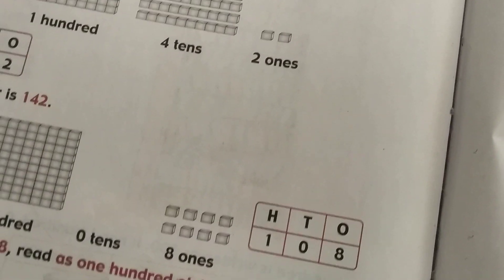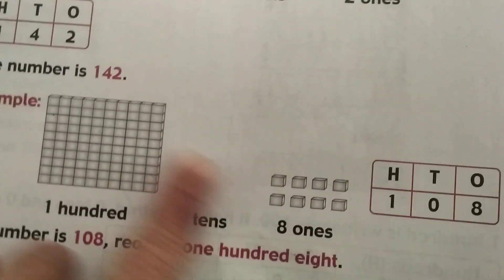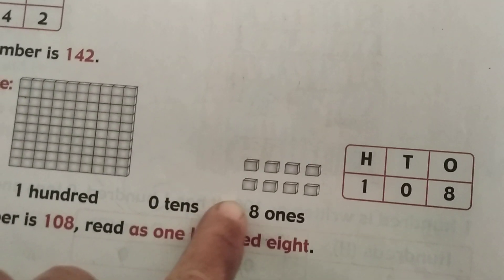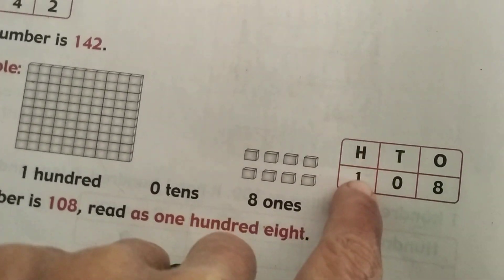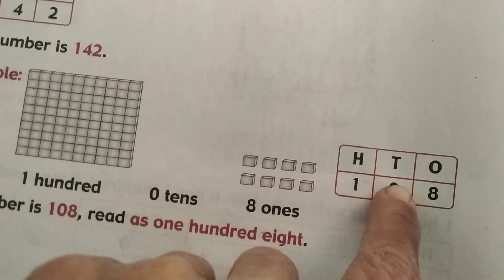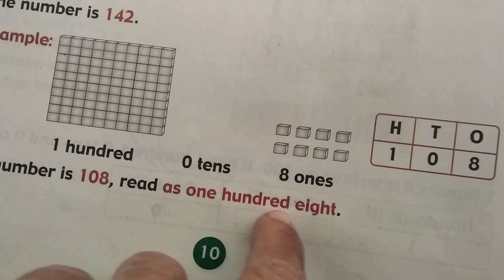Next one: 1 hundred and 8. One hundred, 0 tens, and 8 ones: 1, 2, 3, 4, 5, 6, 7, 8. One hundred, 0 tens, and 8 ones. So you have to write it like this. The number is 108.